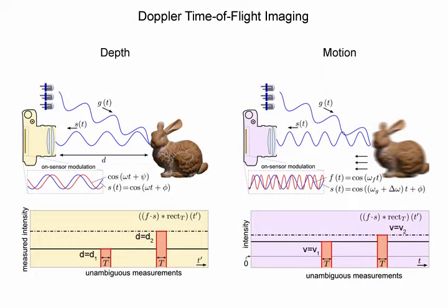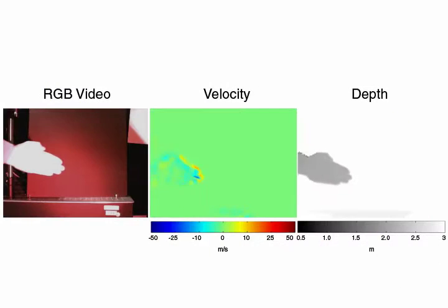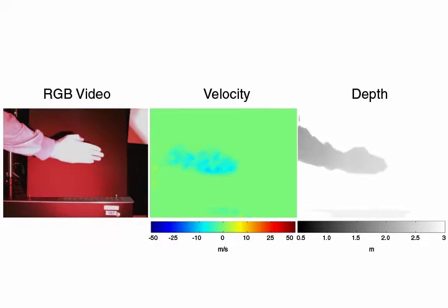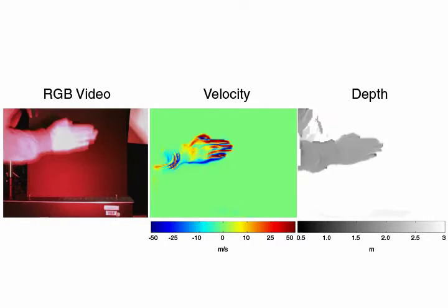With an additional measurement corresponding to that of conventional time-of-flight cameras, we can estimate both velocity and depth of moving scenes. Here, another example showing a quickly moving object with the estimated velocity and depth maps. Note that a conventional time-of-flight camera would not be able to estimate the correct depth in this case.